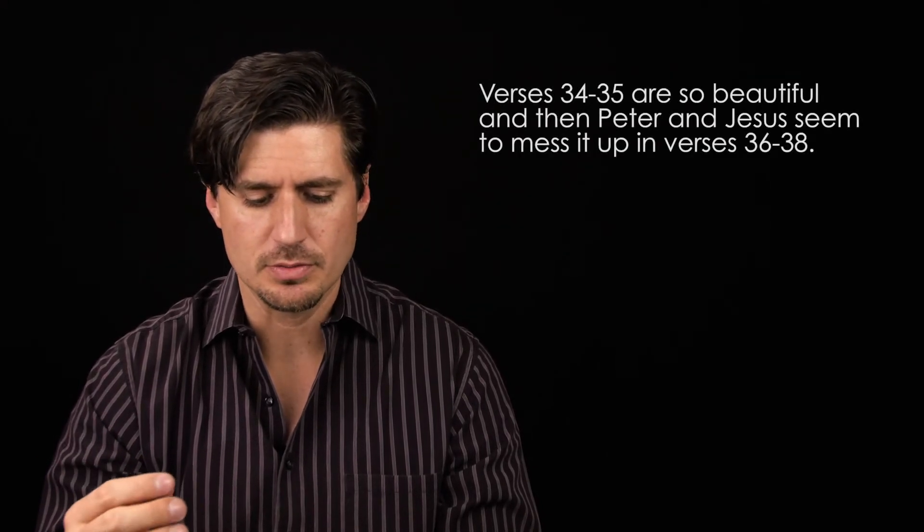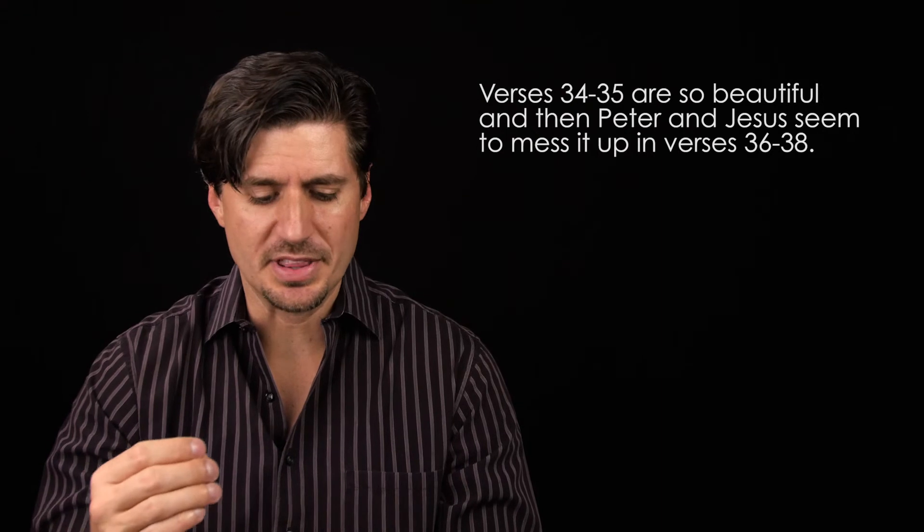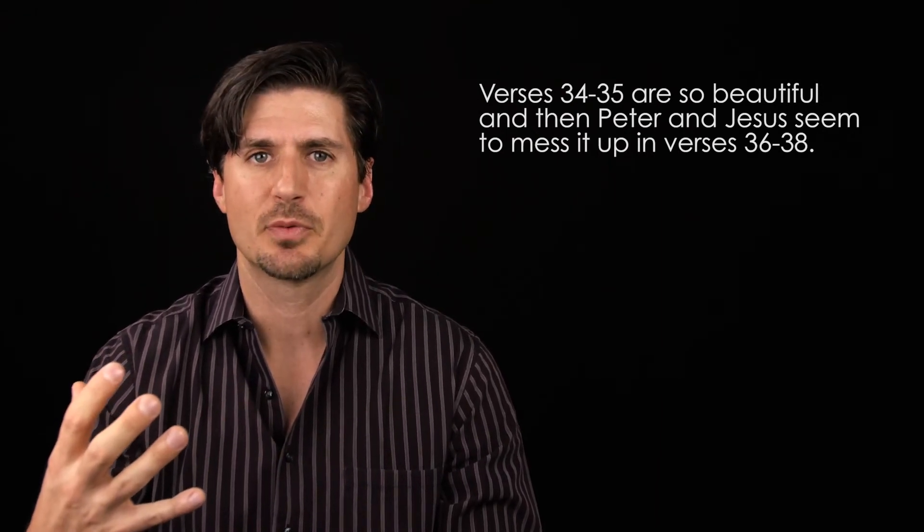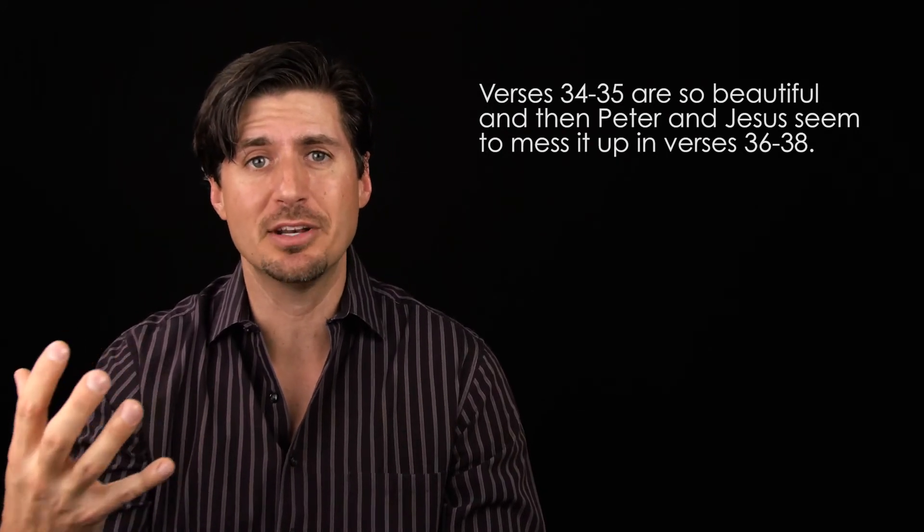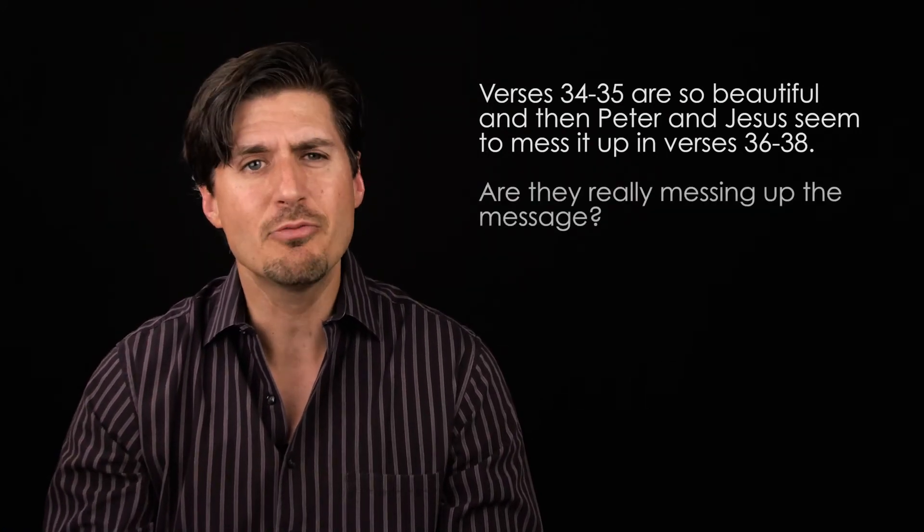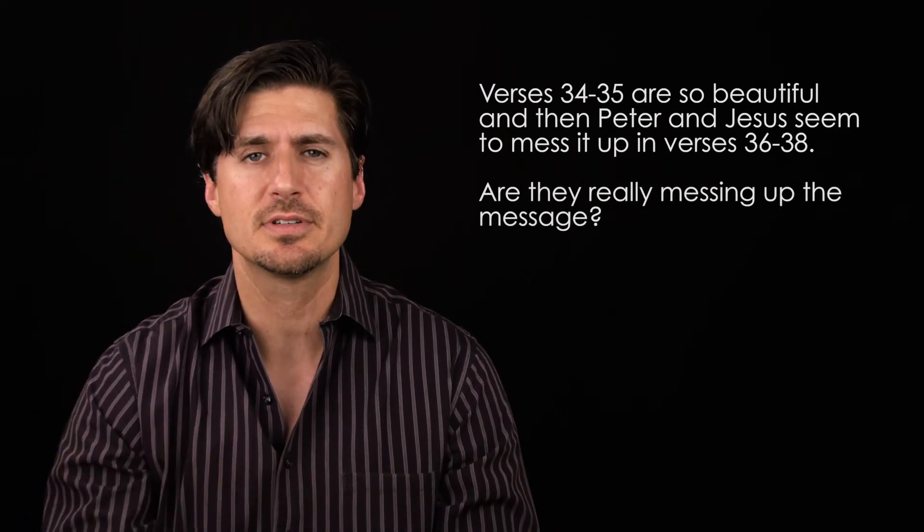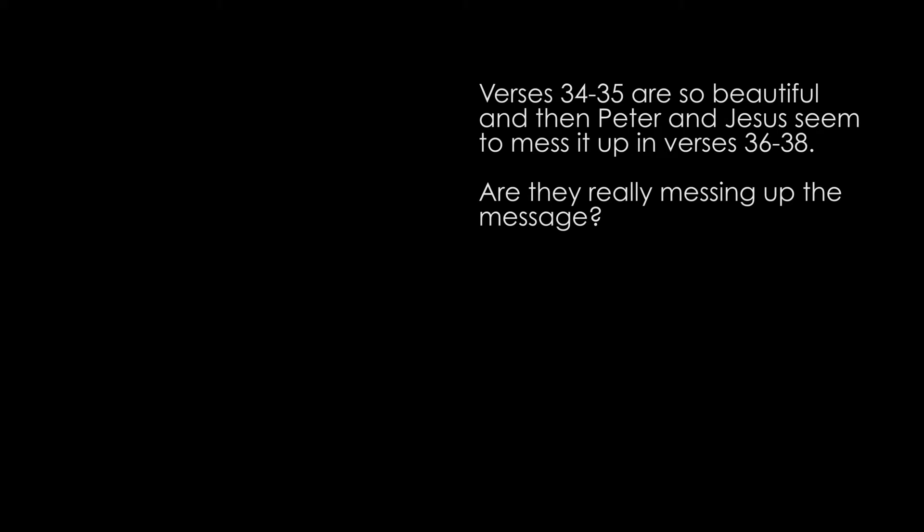Next, I want you to read verses 34 through 35 again. They're so beautiful when you read them. But then Peter and Jesus seem to mess it up in verses 36 through 38 when it's predicted that Peter is going to betray Jesus. Are they really messing up the message of verse 34 through 35?